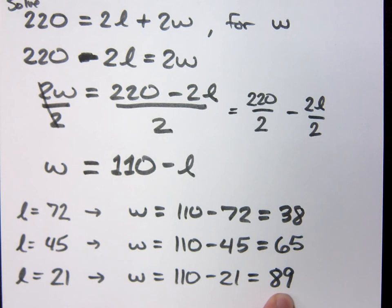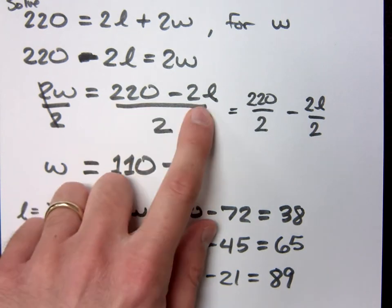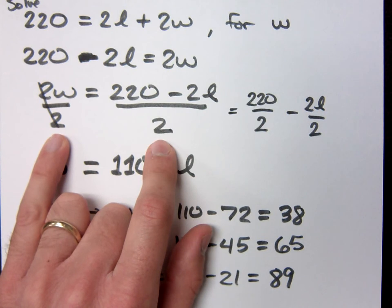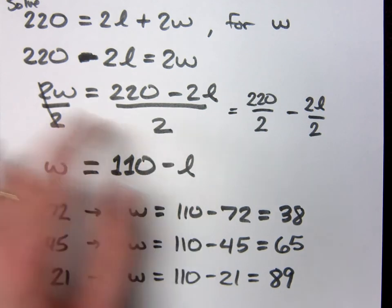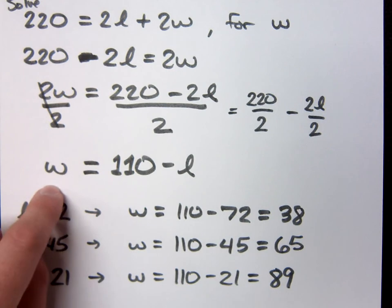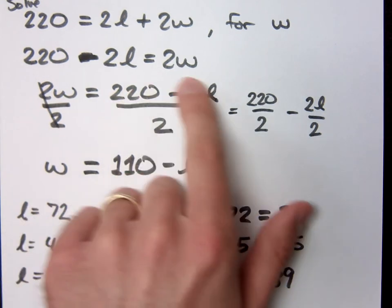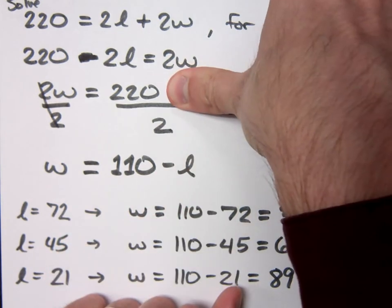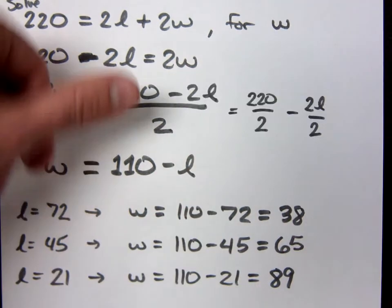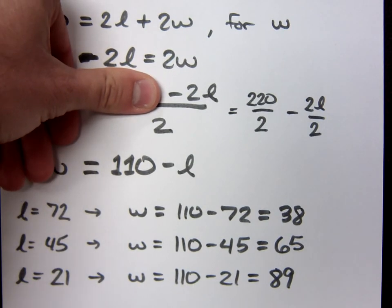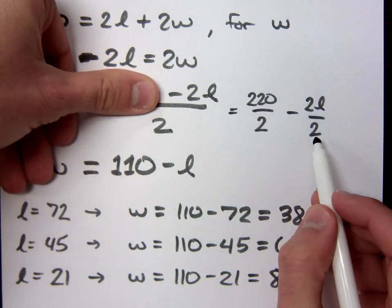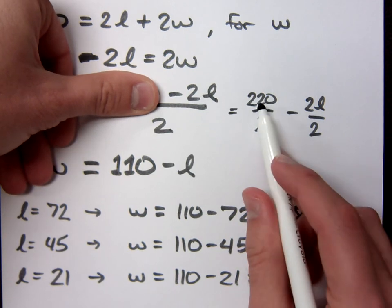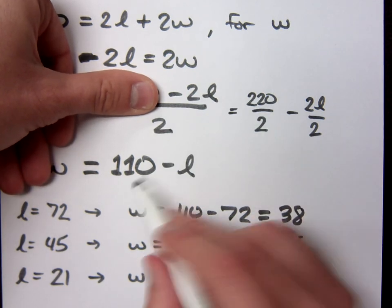I understand the plugging in part, but I just got a little lost how you got 110. This is 220 minus 2L, and I divided both sides by 2, right? When I divide both sides by 2, of course 2W over 2 becomes 1W, right? This fraction right here can actually be separated because you've got 220 over 2 minus 2L over 2. So when I separate the fraction to the two smaller pieces, 220 divided by 2 is 110. 2L over 2 is just L.